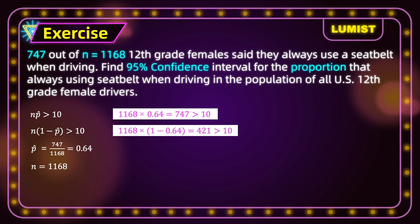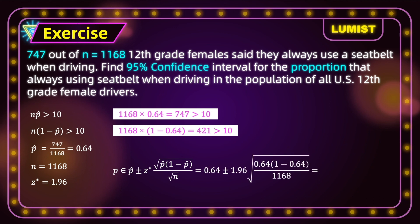We have n equal to 1168 and the critical value is 1.96 for a 95% confidence interval. Now all we have to do is plug in. The confidence interval formula is p-hat plus or minus z* times the square root of p-hat times (1 minus p-hat) divided by n. So that's 0.64 plus or minus 1.96 times the square root of 0.64 times (1 minus 0.64) divided by 1168. When we calculate this, we get the confidence interval of 0.612 to 0.668.